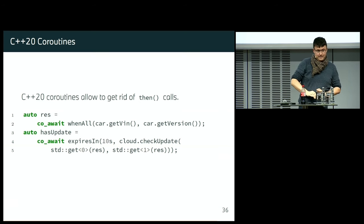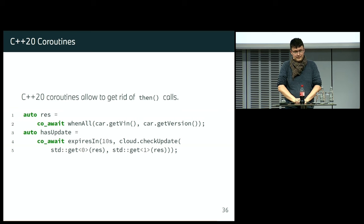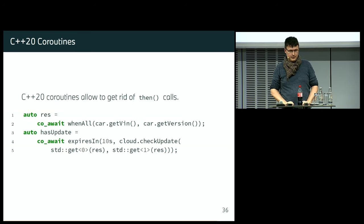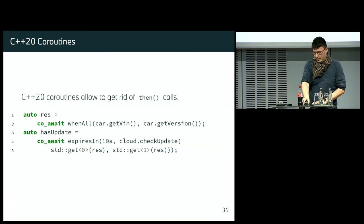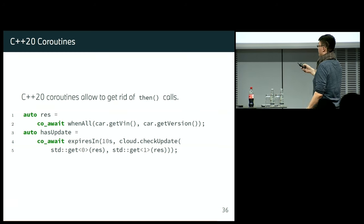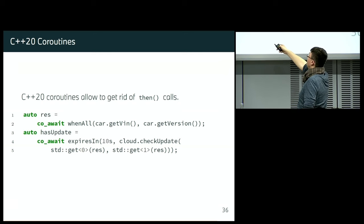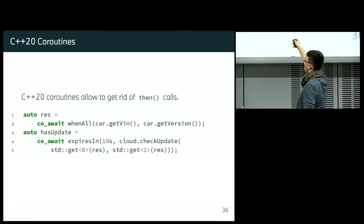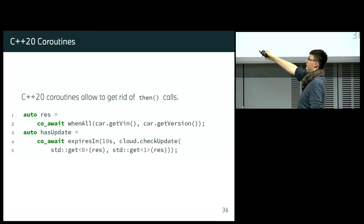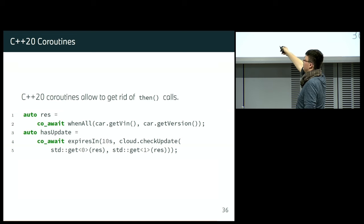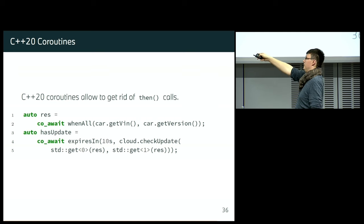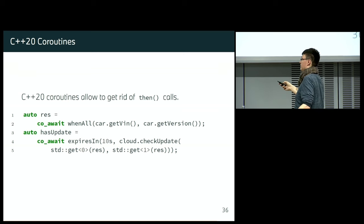With C++20 we have nice coroutines, which simplifies things a lot and we can get rid of the `then` calls. The whole chain from before can be replaced: it's the same `when_all` call, but instead of doing `then` and a continuation, you just call `co_await`. When the result is available, you go to the next line. You again do `expires_in` cloud check-for-update and call `co_await` again. When this is done you go to the next line, and the rest is the same: ifs and checks for timeout. C++20 really makes things shorter and nicer — and you cannot do this with callbacks.